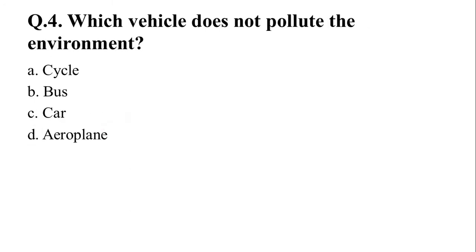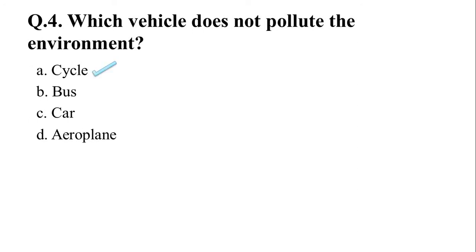Question 4: Which vehicle does not pollute the environment? Options: A. Cycle, B. Bus, C. Car, D. Aeroplane. The right answer is option A — Cycle.